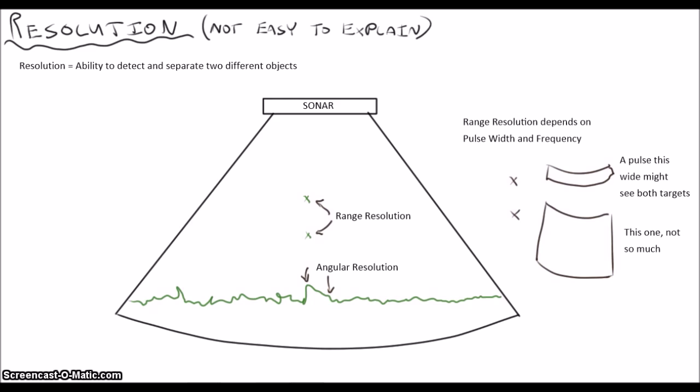Check out this animation of a radar system trying to detect two planes. It succeeds as long as the pulse width is short enough to not overwrite the second return. If you have more pulses or a higher frequency, you might detect more of what you are trying to find.